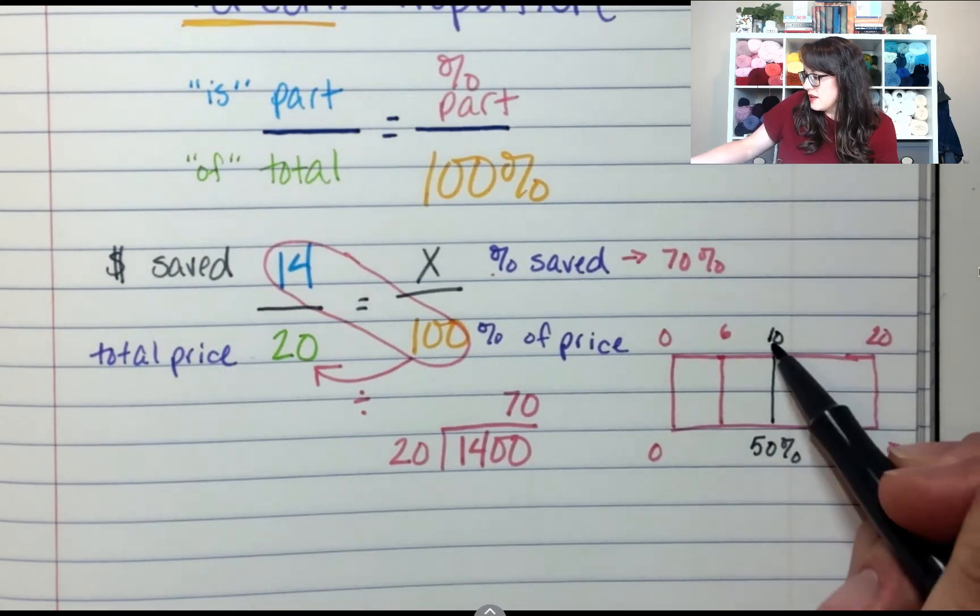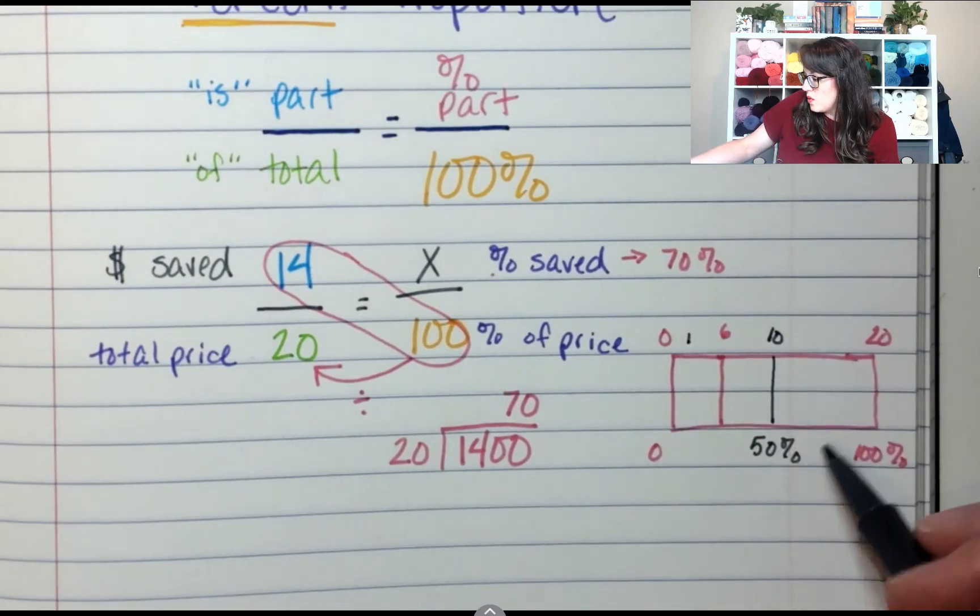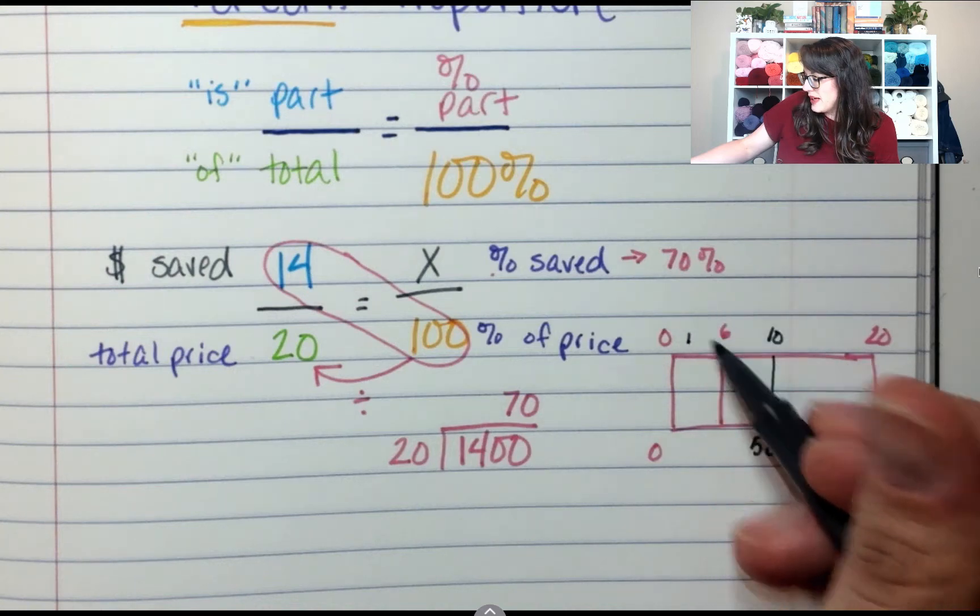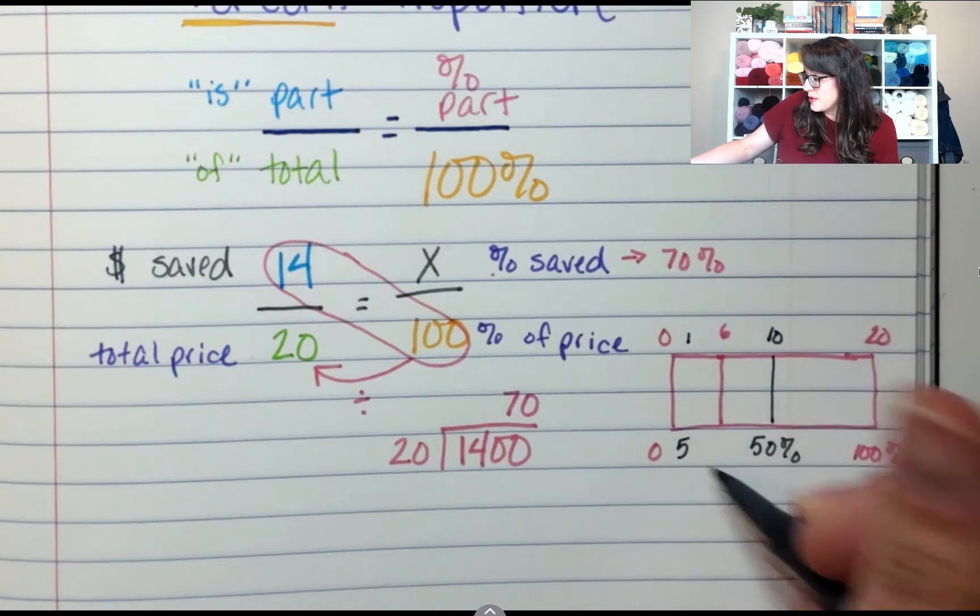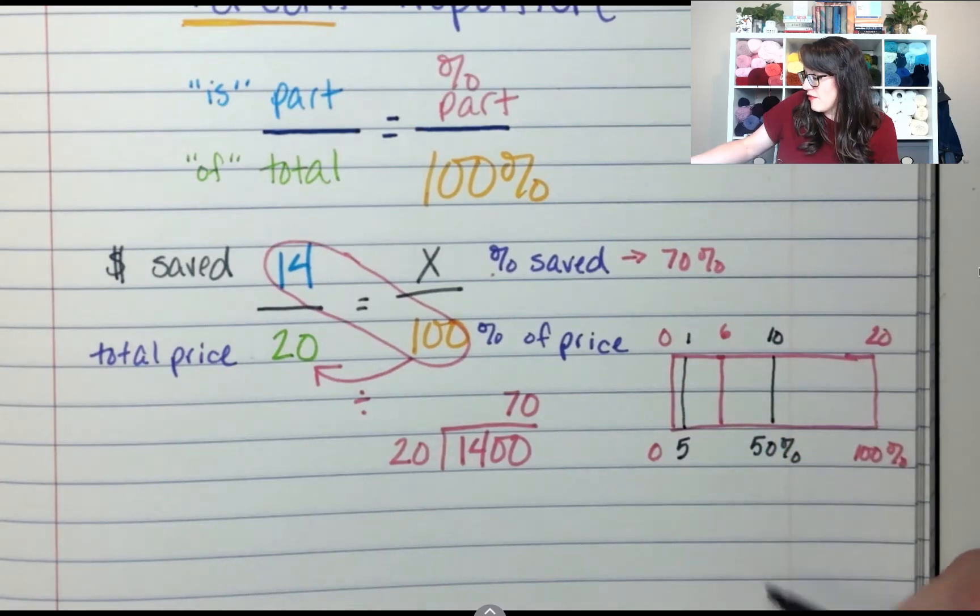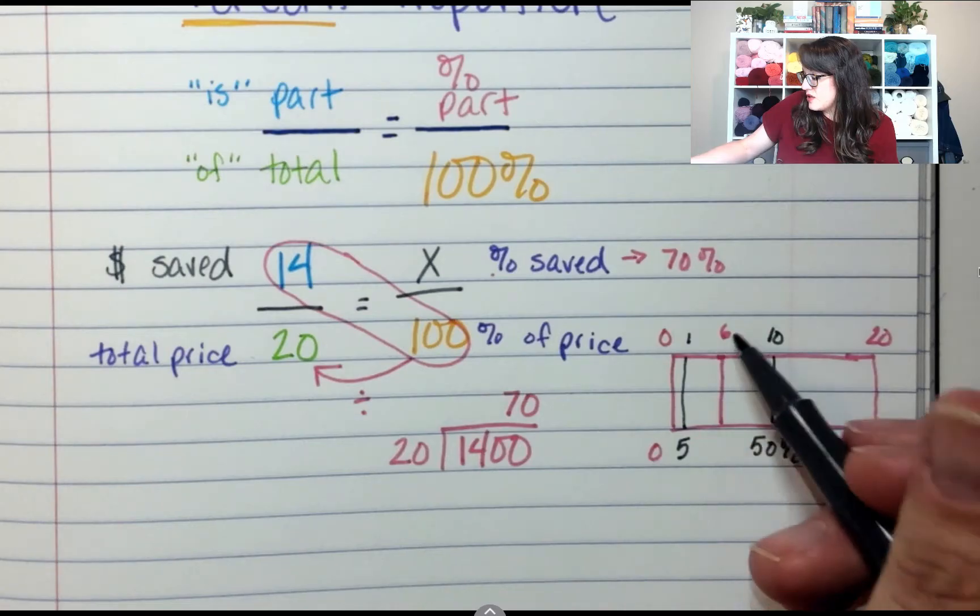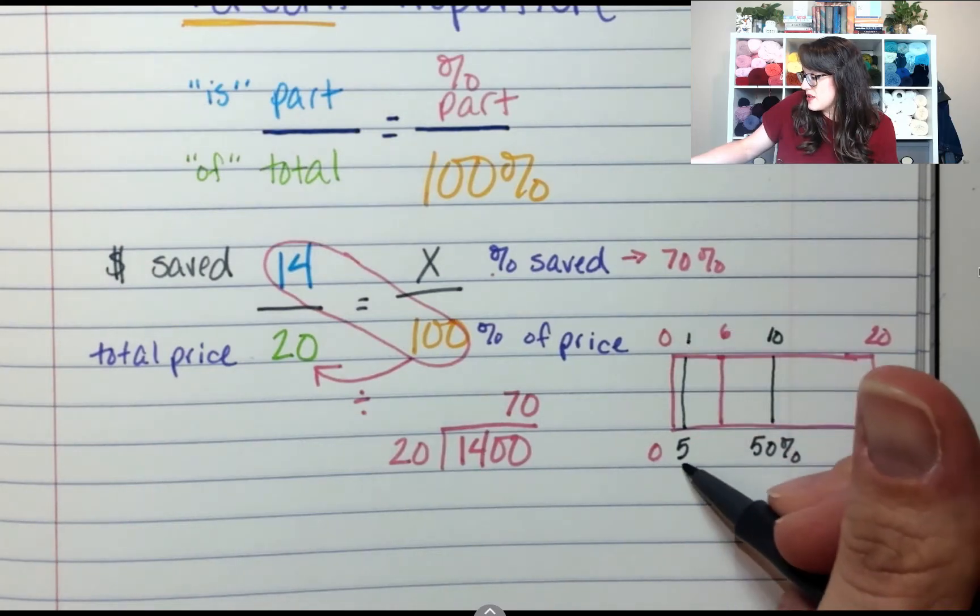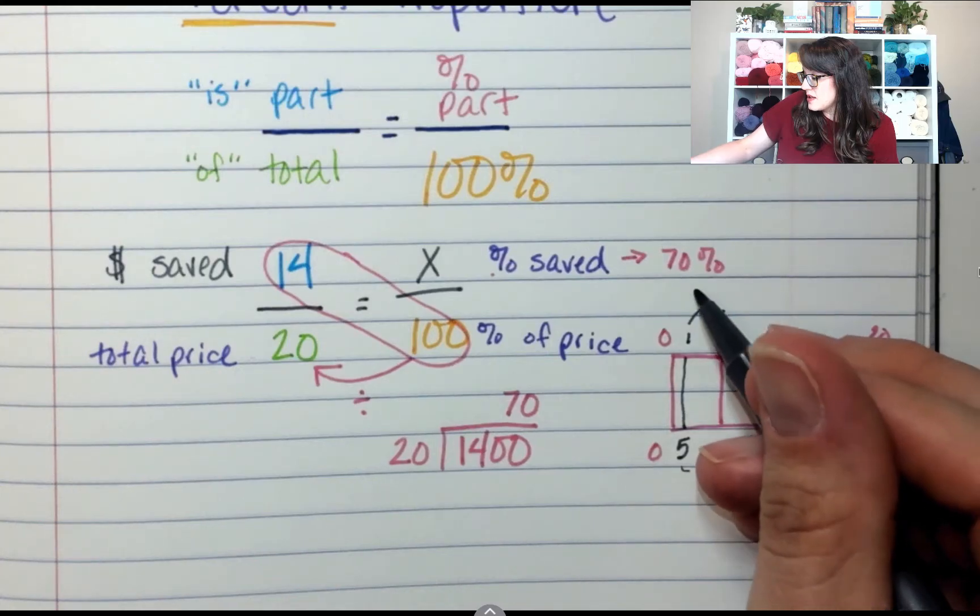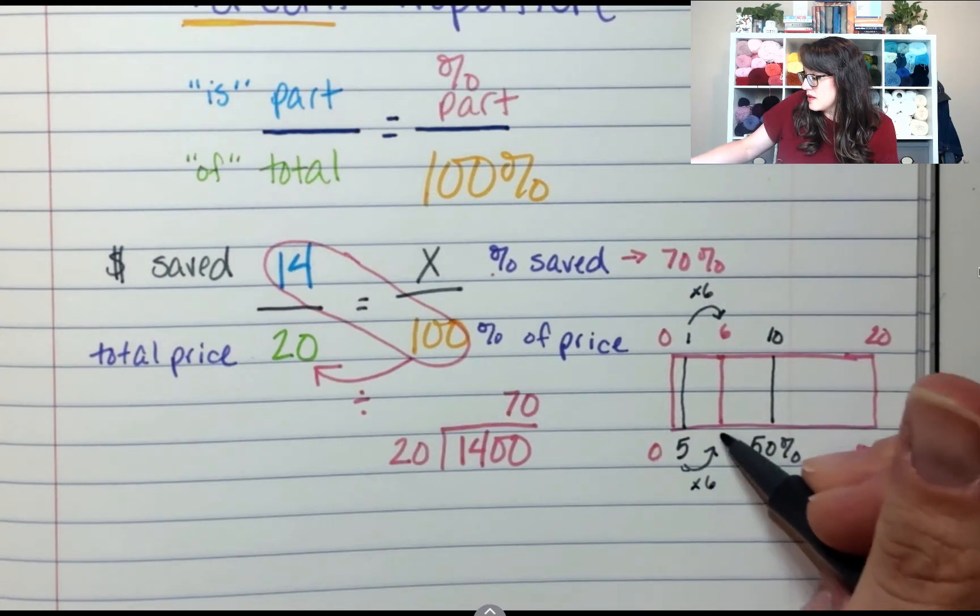What about $1? That would be divide by 10. So divide by 10, that would be 5%. So $1 is 5%. So then to get to 6, I could do times 6. So 5 times 6 times 6 would be 30.